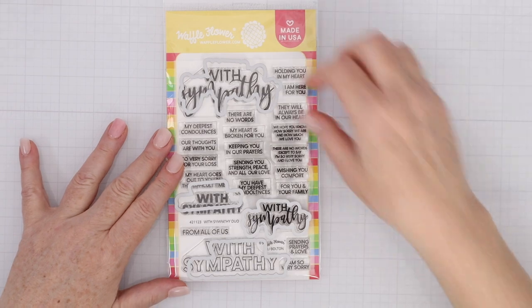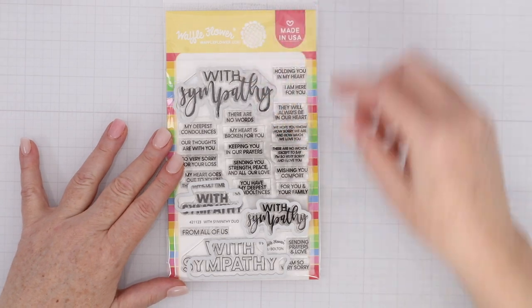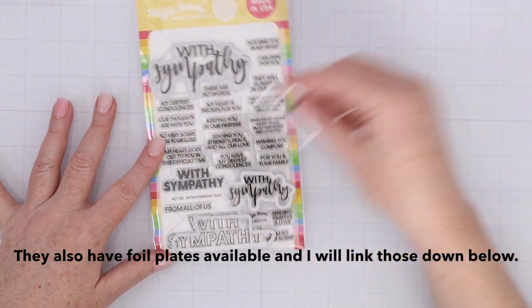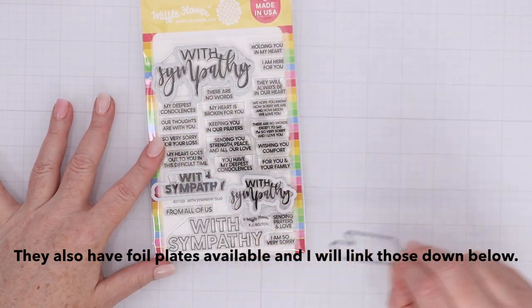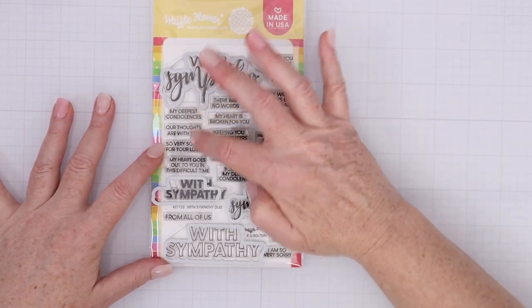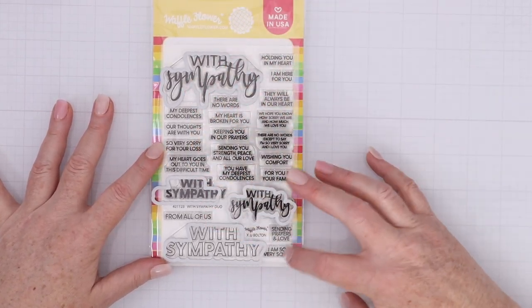First, let me show you this new Sympathy stamps and dies from Waffle Flower that gives you a ton of options in sub-sentiments. These are the stamps and dies from Waffle Flower's With Sympathy stamp set. You can see that there are two different script versions, a large and a smaller one. There's a block version of With Sympathy, and then an outline version. All three of those With Sympathy have dies.